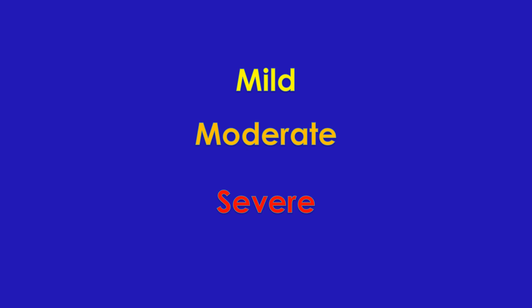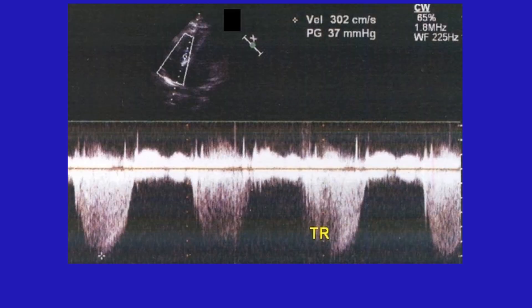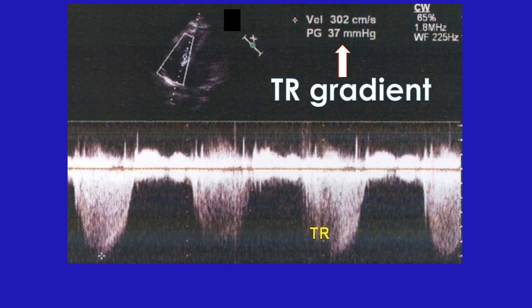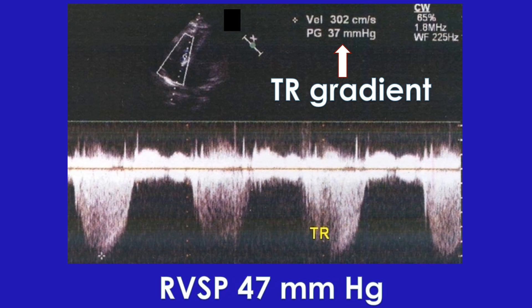The pressure gradients across the valves will be mentioned when the valve is narrowed, and the gradient increases as the severity of the narrowing increases. When there is a leak in the tricuspid valve, the pressure difference between the right ventricle and right atrium can be calculated, usually mentioned as the TR or tricuspid regurgitation gradient. A nominal value of 10 is added to this gradient and mentioned as the estimated right ventricular systolic pressure, or RVSP. An elevated RVSP implies increased pressure in the pulmonary artery, known as pulmonary hypertension, if the pulmonary valve is not obstructed.